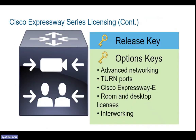To apply these licenses, you have to activate a PAK — a Product Activation Key — that you receive from the product license registration portal after purchase. There are two types of keys: release keys and option keys. Release keys are used once per Expressway device and are generated when you register your Expressway serial number on the product license registration portal. Option keys are for any additional functions you want to add. On a licensed Expressway, you can add option keys for advanced networking, TURN ports, Expressway-E integration, room and desktop licenses, or interworking.